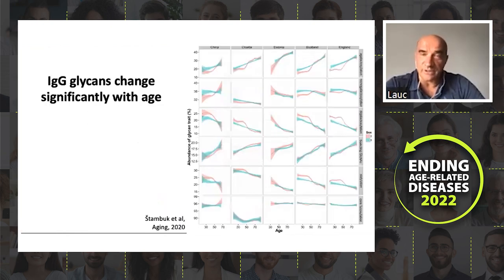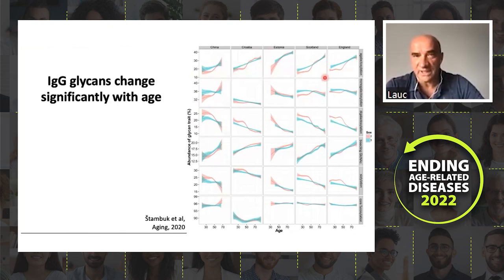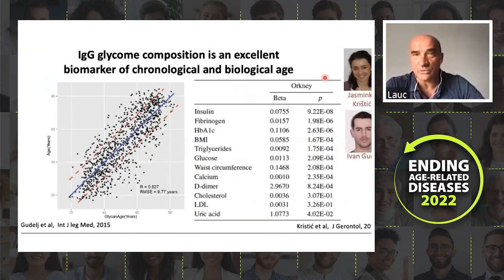One of the important elements is age. When we started to look at large cohorts, we realized that glycans change a lot with age. This is a relatively recent paper showing five different population cohorts — blue are men, red are women — and with age, glycans change a lot. This enabled us to create the first glycan age clock of aging, which was published in late 2013.